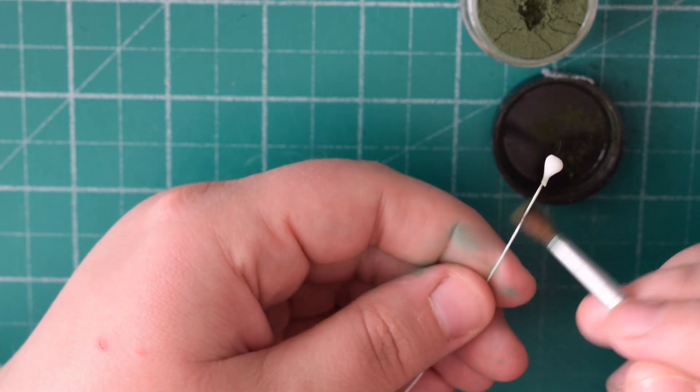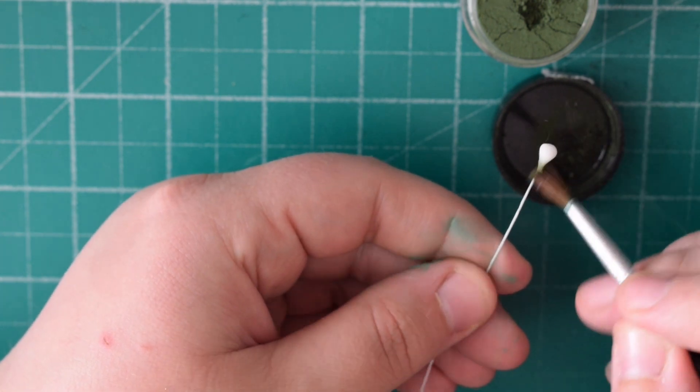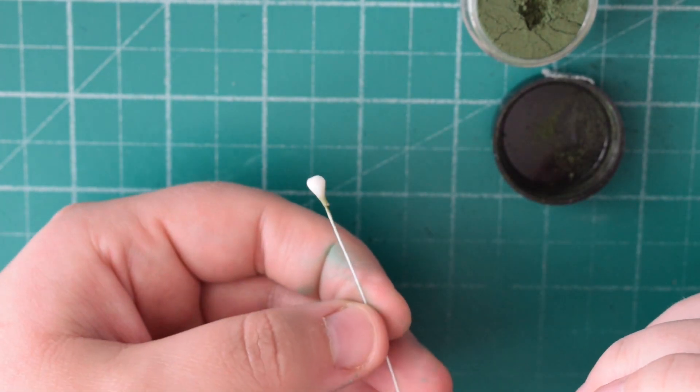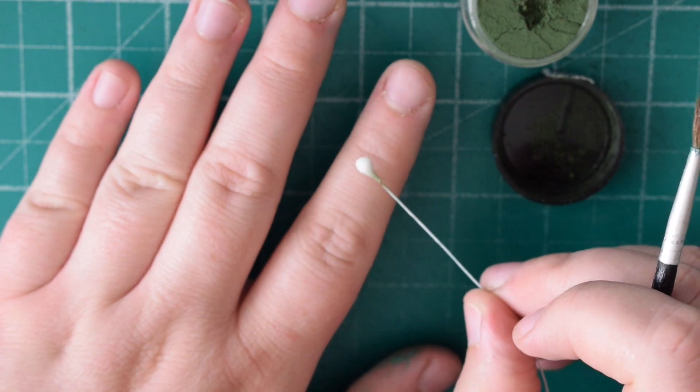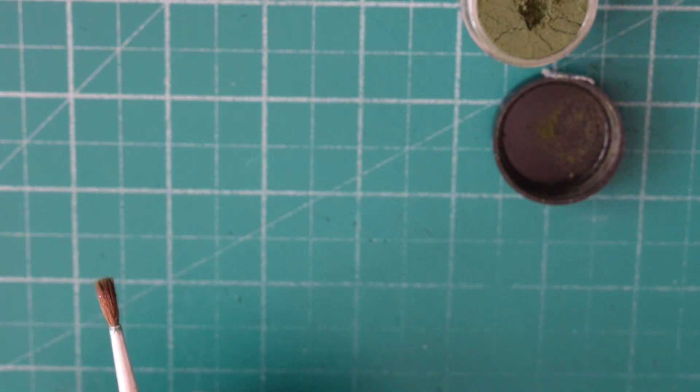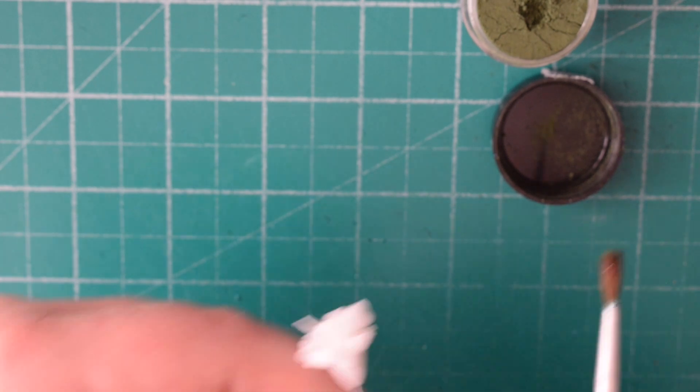So I've got some green dust and I'm just going to dust around the base of the flowers. These flowers are too small to be putting any of the calyx on so I just prefer to dust it.